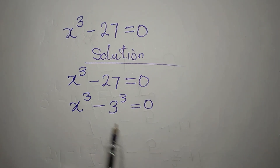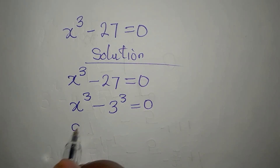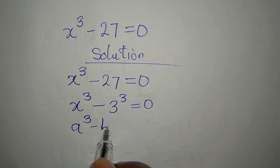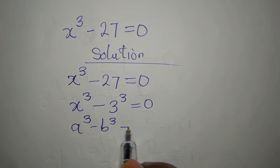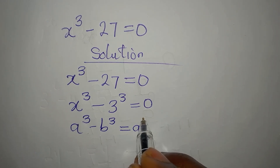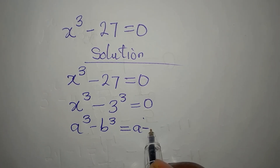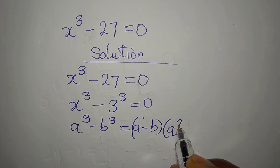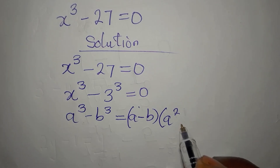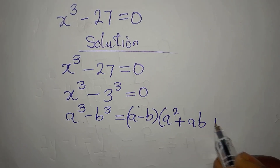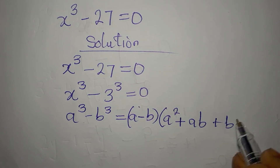So we will apply the difference of two cubes. If you have a cubed minus b cubed, this is the same thing as a minus b, into a squared plus ab plus b squared.